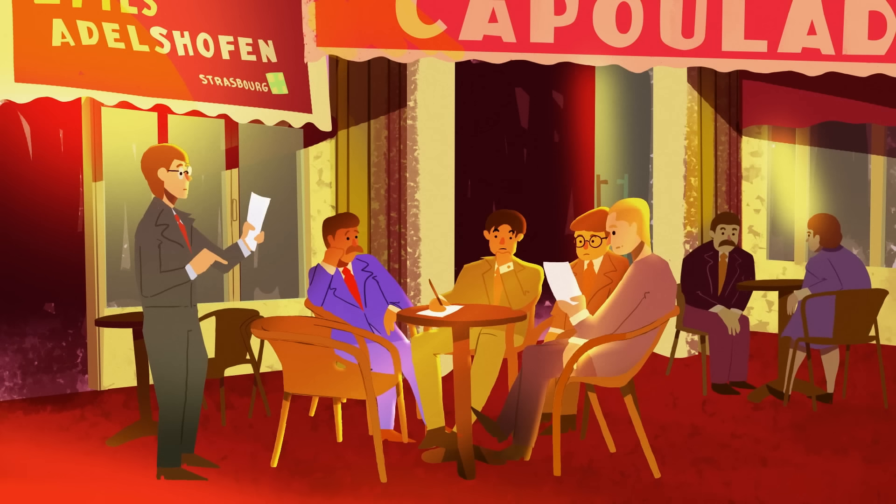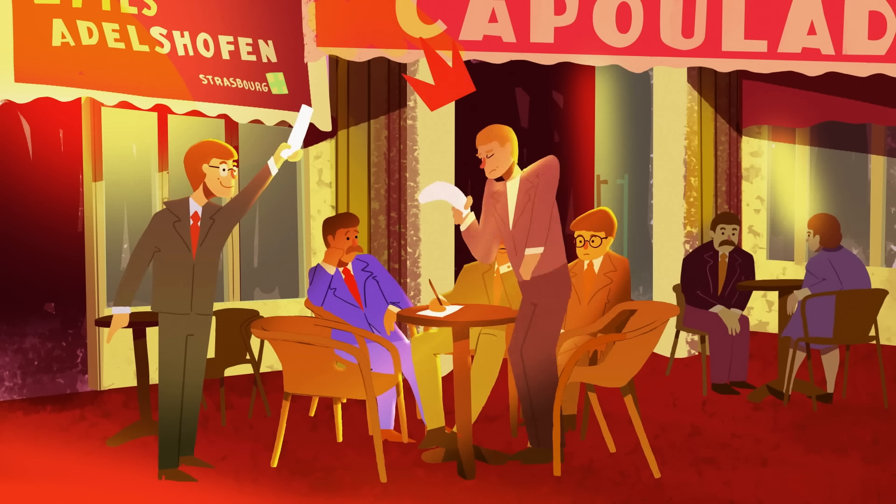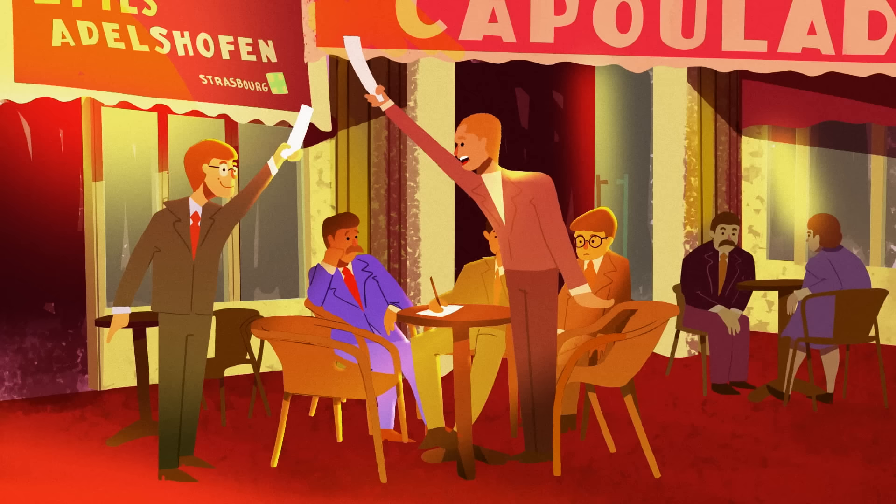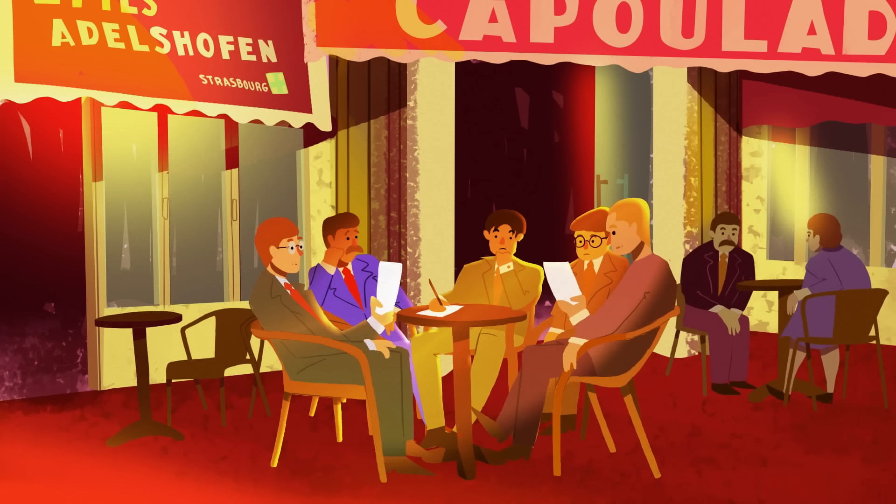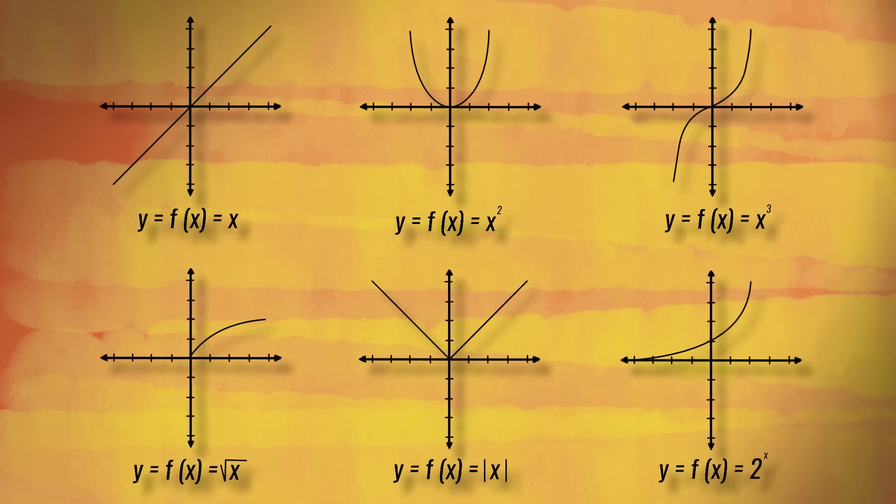But to truly reveal common ground, the group needed to identify consistent rules that applied to a wide range of problems. To accomplish this, they gave new, clear definitions to some of the most important mathematical objects, including the function.